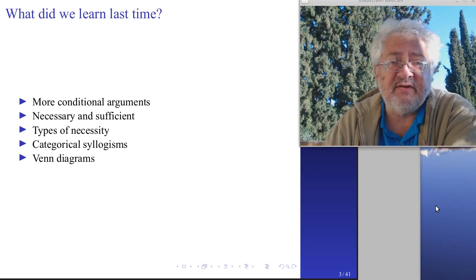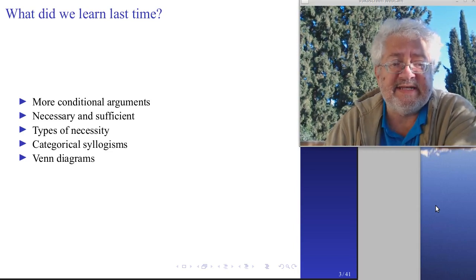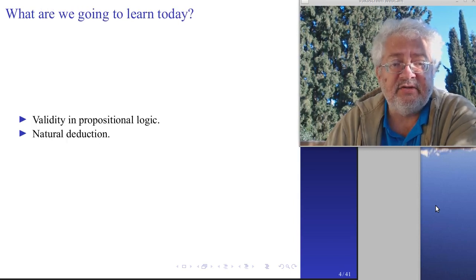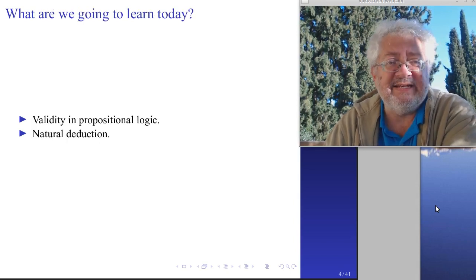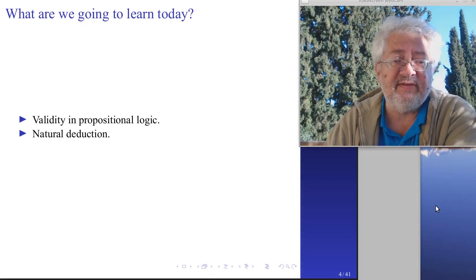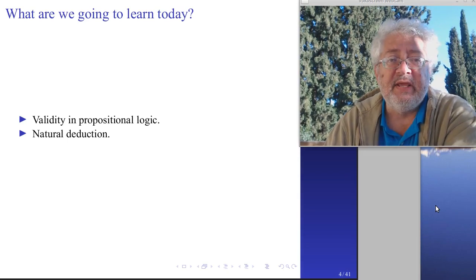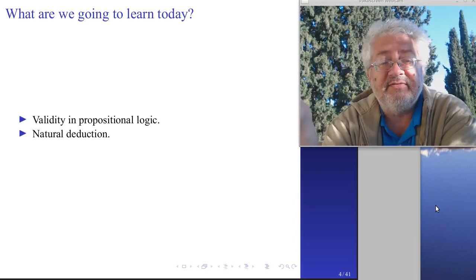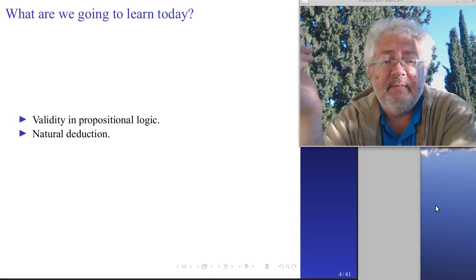In the last sessions we talked about conditional arguments, necessary and sufficient conditions, types of necessity, and categorical syllogisms with Venn diagrams. Today we are talking about what validity is, how we can define it, how we can see whether an argument is valid, and then we will learn a formal method to show whether an argument is valid - called natural deduction, which is a kind of proof in logic.